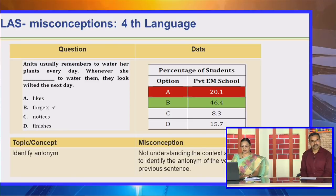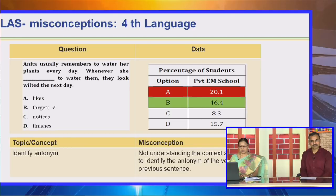The right answer is B — 'forgets.' But more students answered A. Here also the misconception is that students are not understanding the context and are not able to identify the antonym of the verb in the previous sentence. They are overlooking the previous sentence and simply reading the given sentence without understanding the full context.